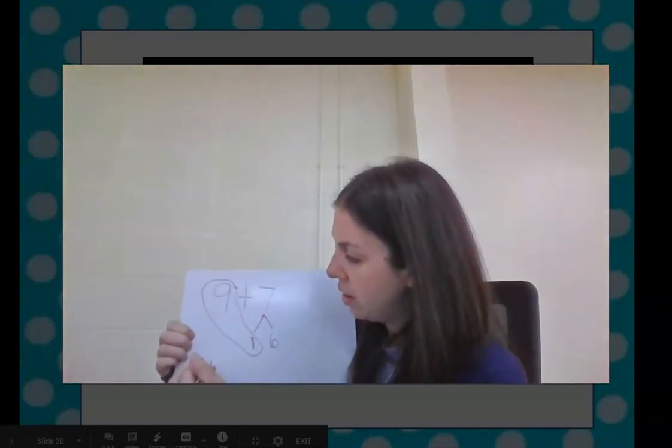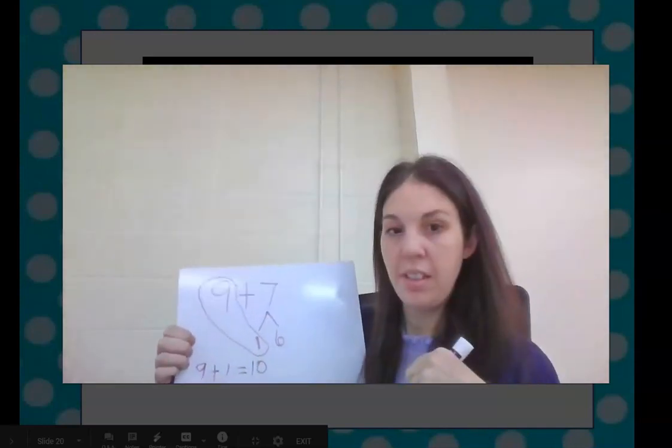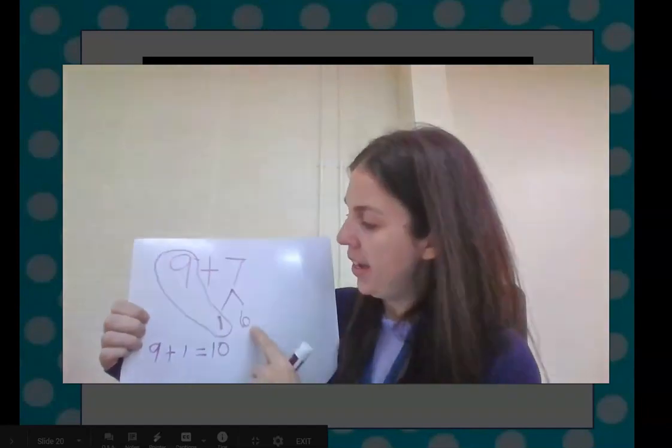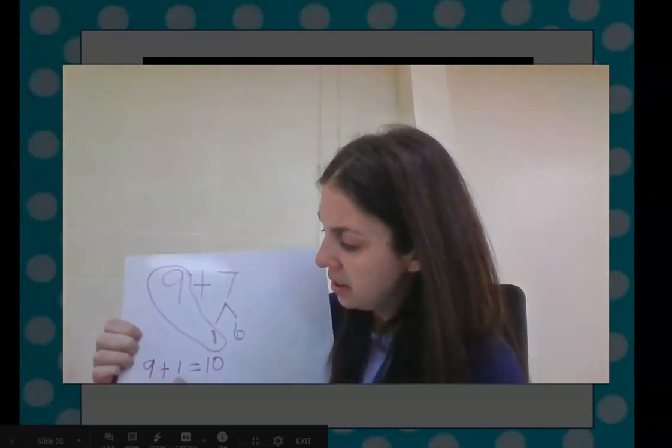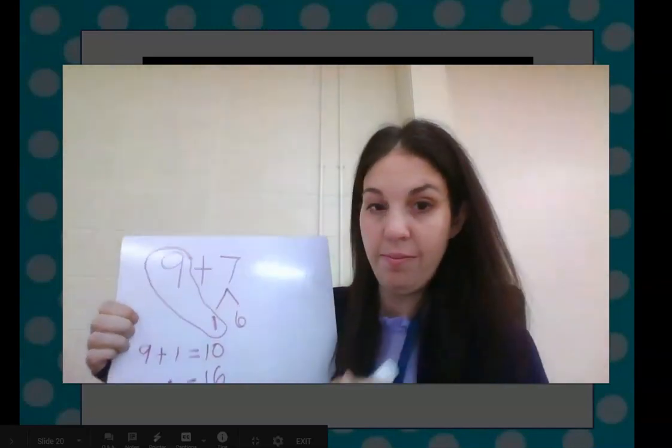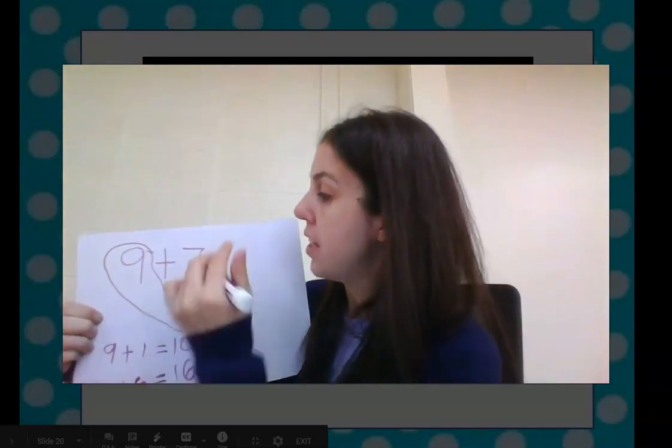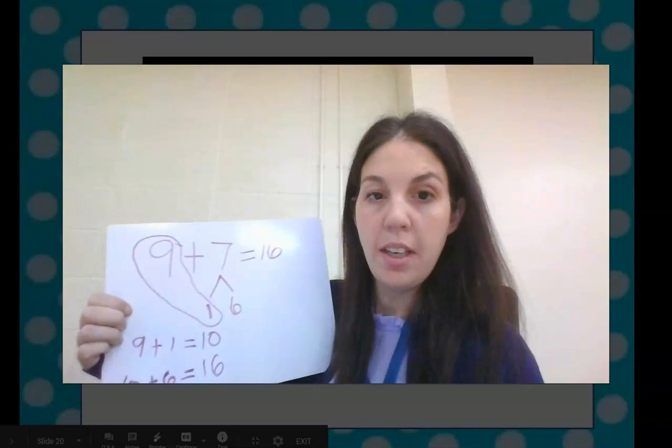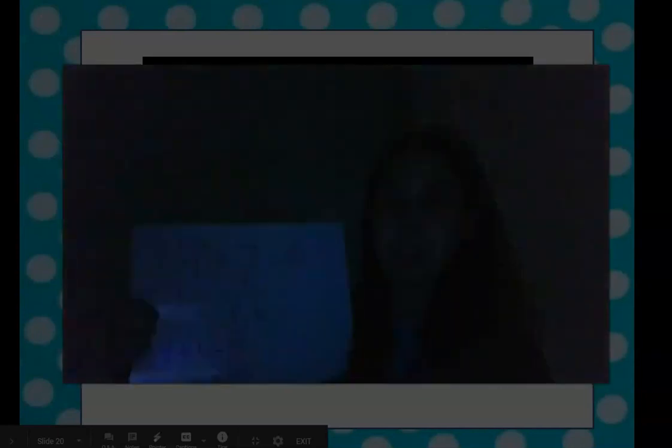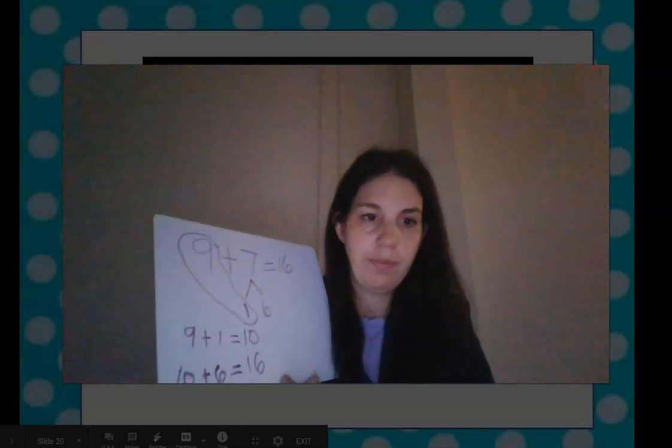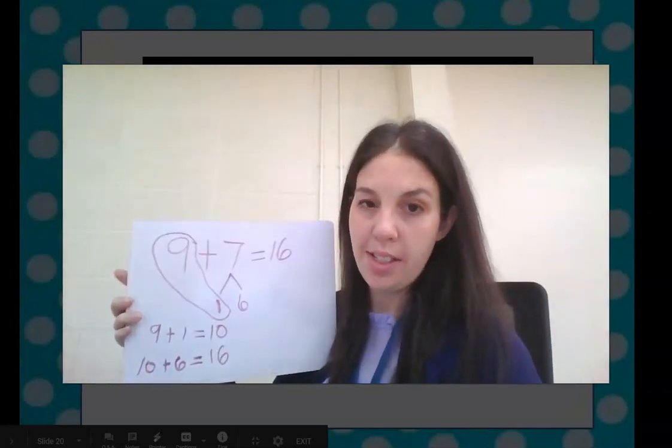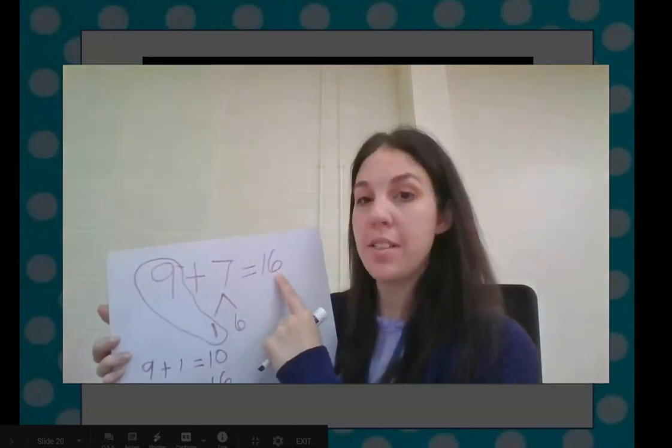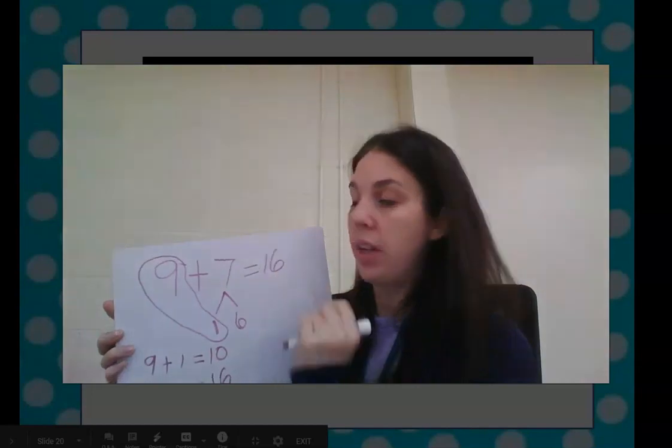9 plus 1 equals 10. Right? And then look. I have 6 more. So now I'm going to say 10 plus 6 equals 16. 16, which means 9 plus 7 equals 16. How many tens are in 16? There is one 10 in 16. How many ones are in 16? There are 6 ones. So it's 1 ten and 6 ones in the number 16.